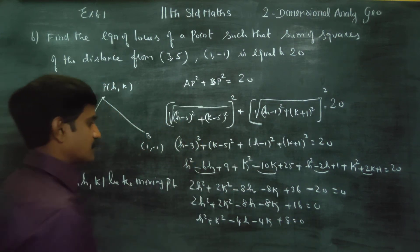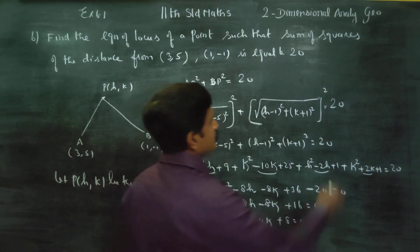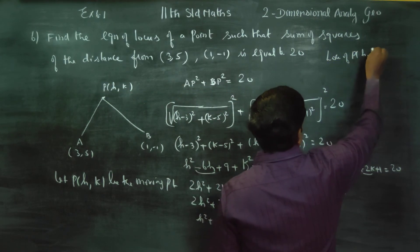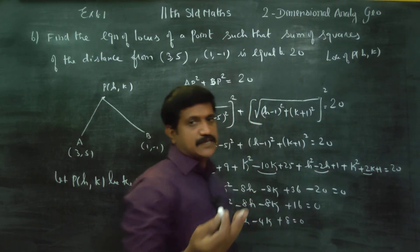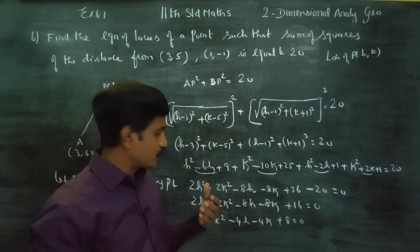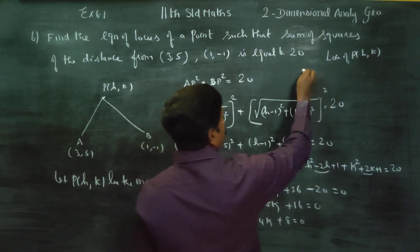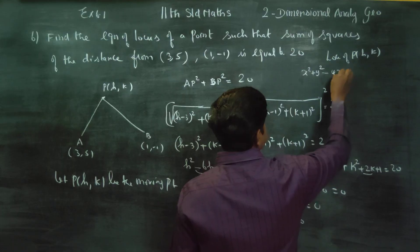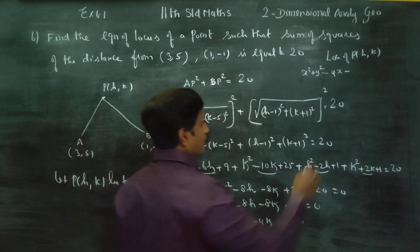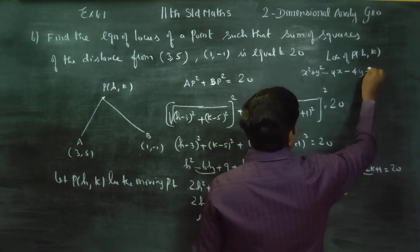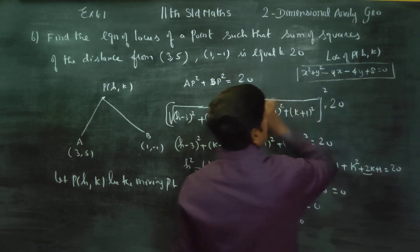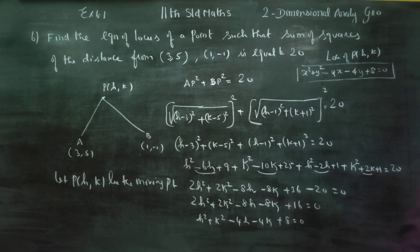Divide all terms by 2: H² plus K² minus 4H minus 4K plus 8 equals 0. I want the locus, so substitute H with X and K with Y. Therefore, the answer is x² plus y² minus 4x minus 4y plus 8 equals 0. This is the equation of the locus of the moving point. Thank you.